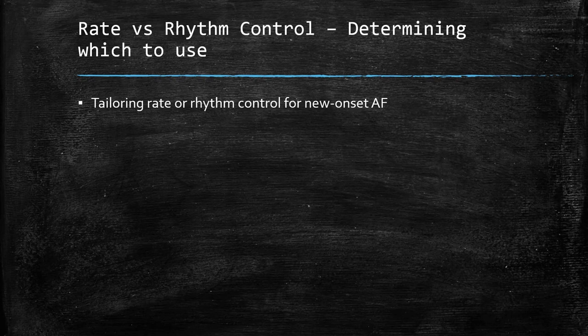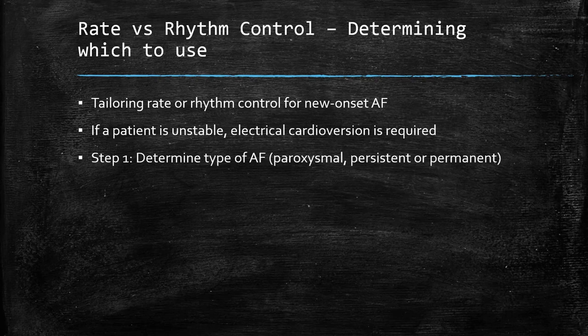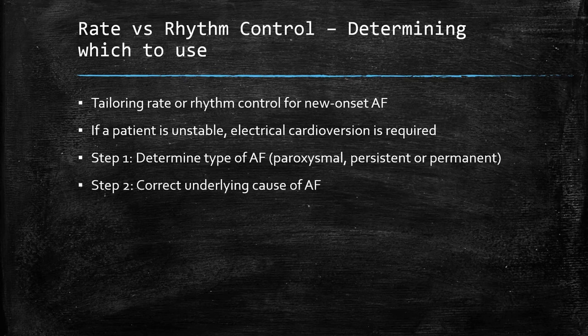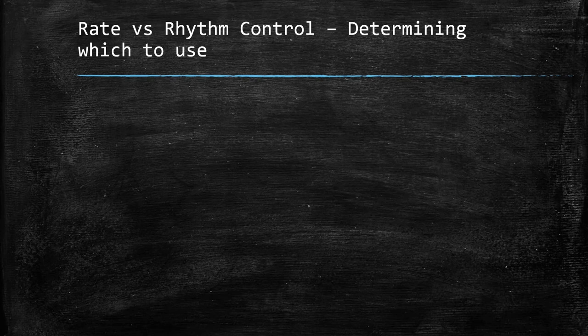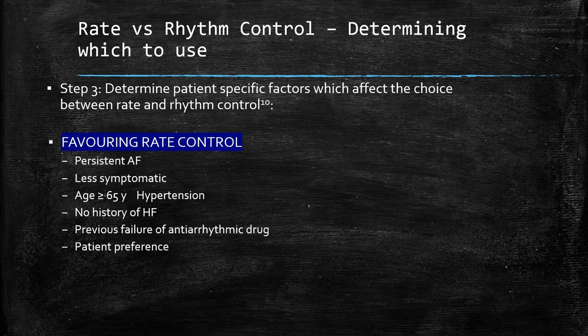With new onset AF, we first determine the type of AF, which will influence management. Prior to this, if a patient is unstable, we give them electrical cardioversion as required. Step 1 is determining the type of AF. Step 2 is correcting underlying causes of AF such as hypertension and hyperthyroidism. Step 3 involves looking at the complete clinical picture to determine whether to use rate or rhythm control. Factors favouring rate control include having persistent AF, being less symptomatic, and being greater than 65 years of age, as well as failure of antiarrhythmic drug administration.